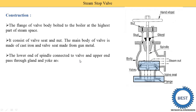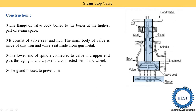The lower end of the spindle is connected to the valve, and the upper end passes through the gland and connects to the hand wheel. One end of the spindle connects to the valve and the other end to the hand wheel. The gland is used to prevent leakage of steam, because steam could escape through the space between the spindle and the body. The gland prevents this leakage.